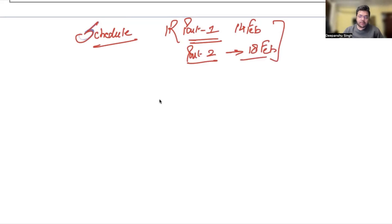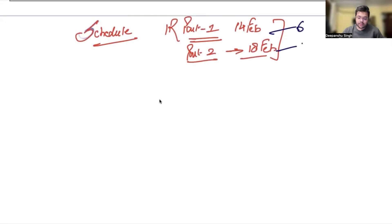Part 1 covers Jan to June, Part 2 covers July to December — six months and six months. So this will cover your entire current affairs from January 2023 to December 2023.